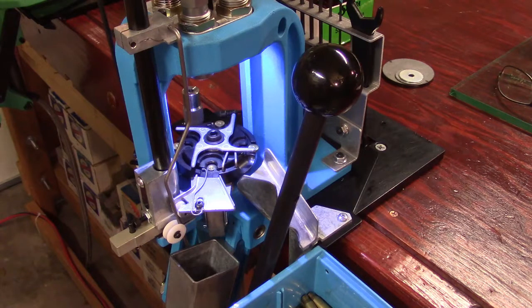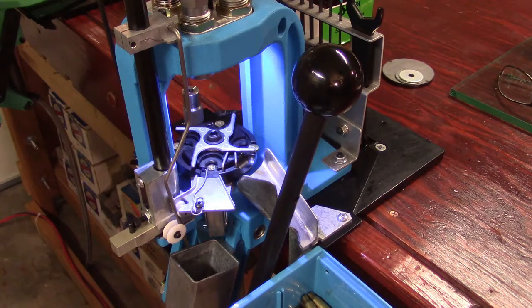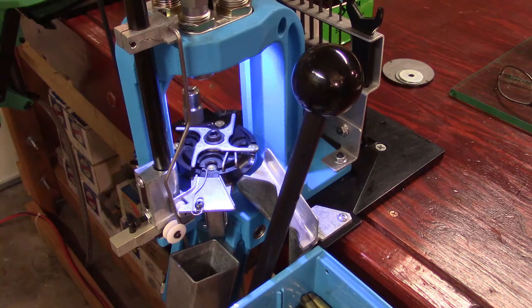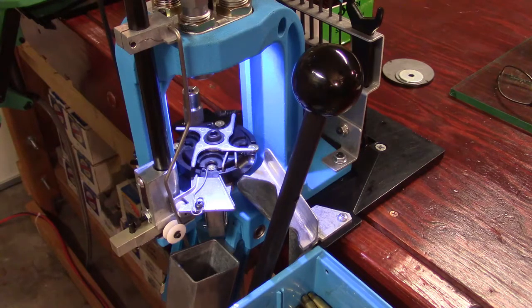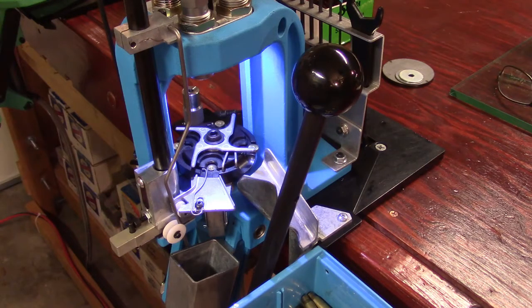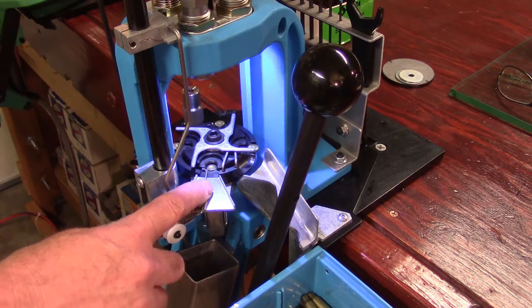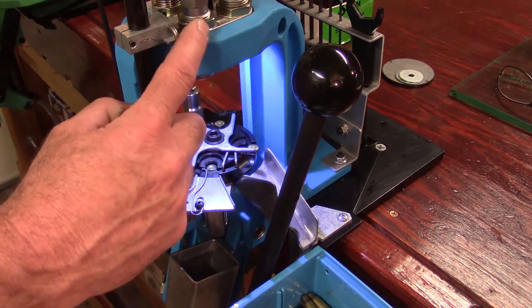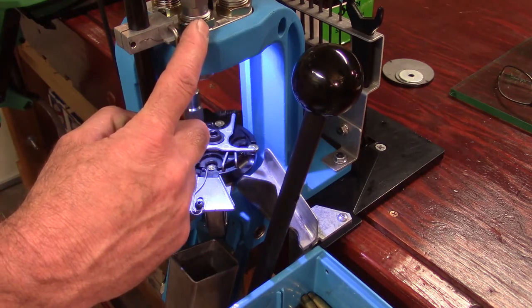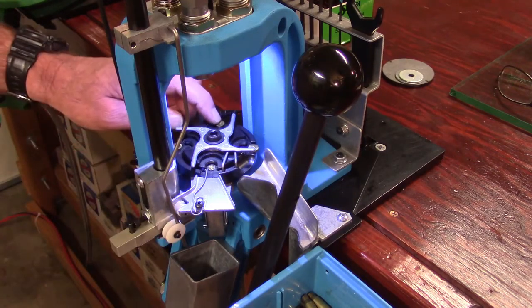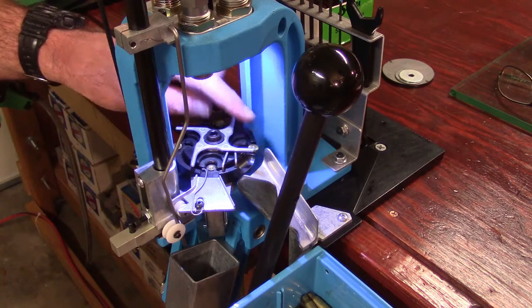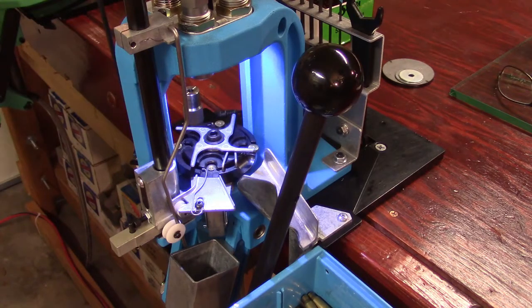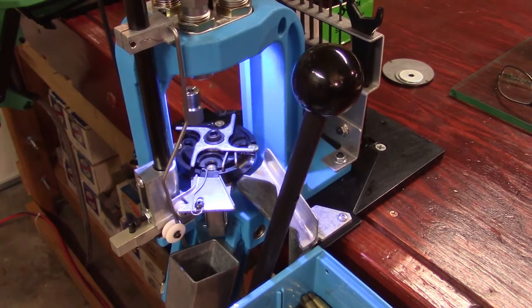Why? Your case prep is everything to accuracy, so now you're addressing very accurate trim lengths, cleaning the primer pockets, uniforming the primer pockets. Then you remove your resize die, and now all you're utilizing is station two, three, and four.